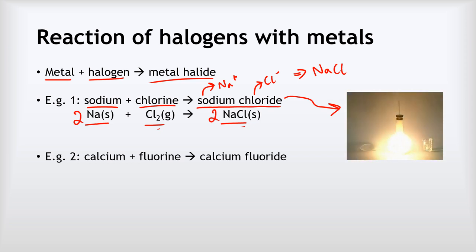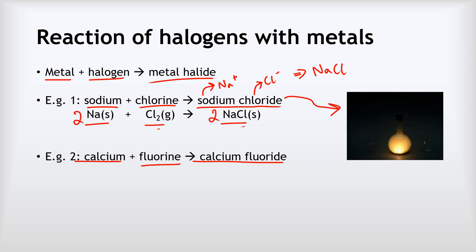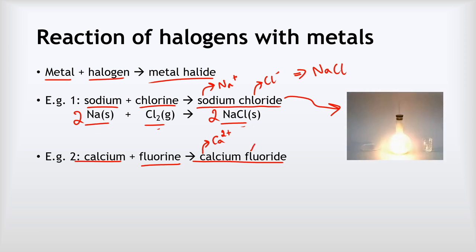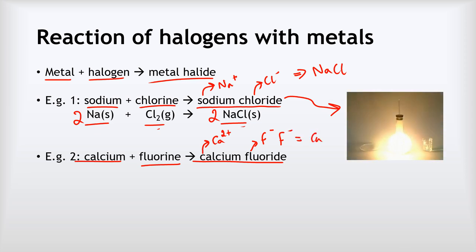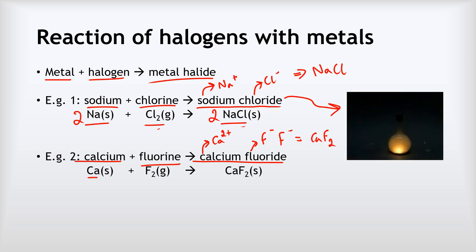Now let's look at calcium reacting with fluorine. Calcium is our metal, fluorine is our halogen, and the metal halide will be calcium fluoride. Calcium is in group two so it forms a Ca2+ ion; fluorine is in group seven so it forms F- ions. To balance the two positive charges we need two F- ions, so the formula is CaF2. The equation is Ca + F2 → CaF2, which is already balanced.